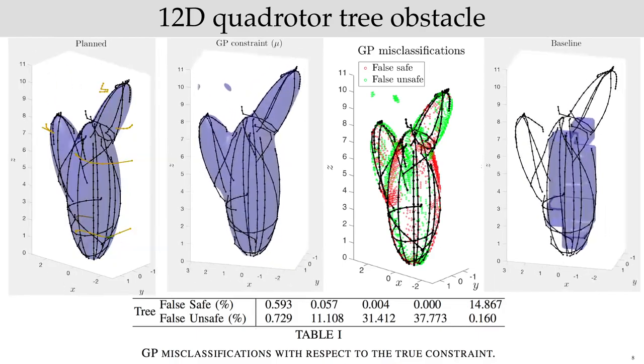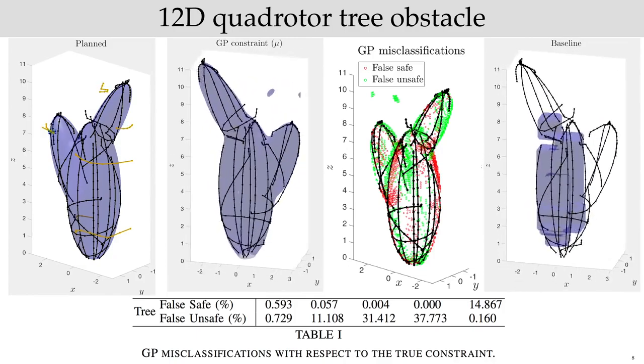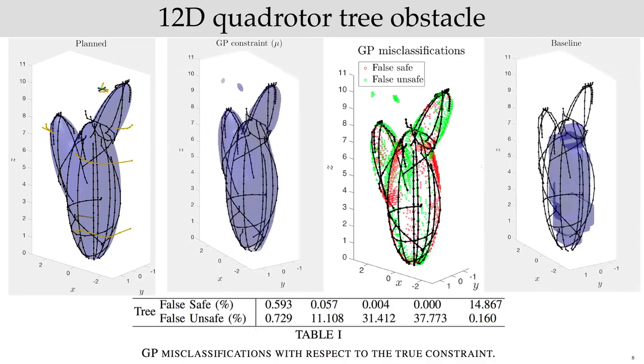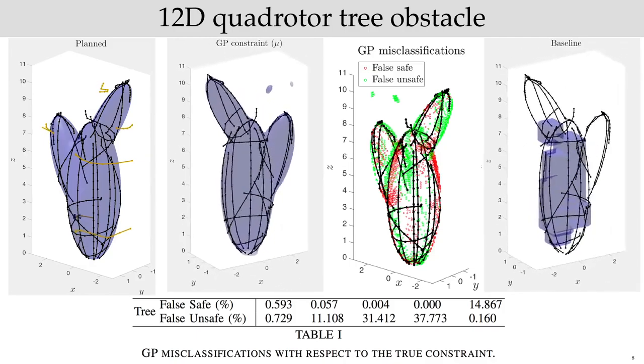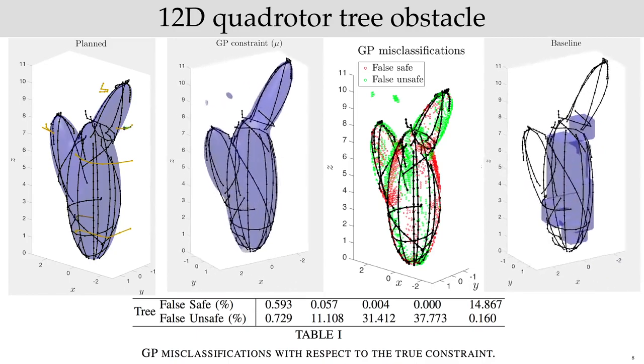Moreover, due to this accuracy, using our planner to compute plans which are safe with probability 0.9 returns plans that are safe for the true constraint. These plans are visualized in gold on the left. In contrast, previous constraint learning methods, which approximate unknown constraints as unions of boxes, fail to accurately recover the constraint.